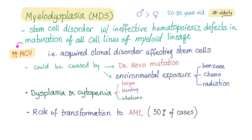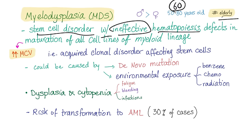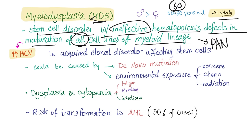MDS is more common in males than females, around 50 to 80 years of age, so the median age is 60 or more. It is a stem cell disorder with ineffective hematopoiesis and true dysplasia — defects in maturation of all cell lines of the myeloid lineage, which is why you will have pancytopenia.